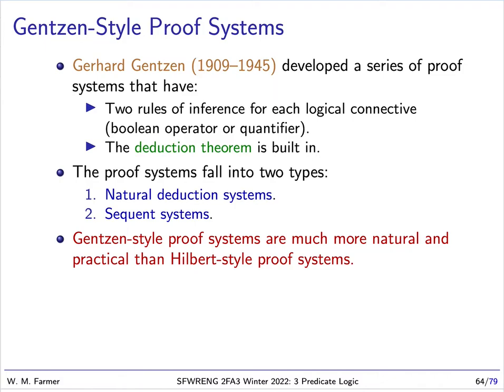Gentzen is a very famous mathematician and logician. In many ways, people might call him the father of proof theory, one of the major areas of logic. Gentzen died in 1945. He was a supporter, apparently, of the Nazi regime in Germany, and he was captured by the Soviets, put in prison, and he died of starvation in that prison in 1945.